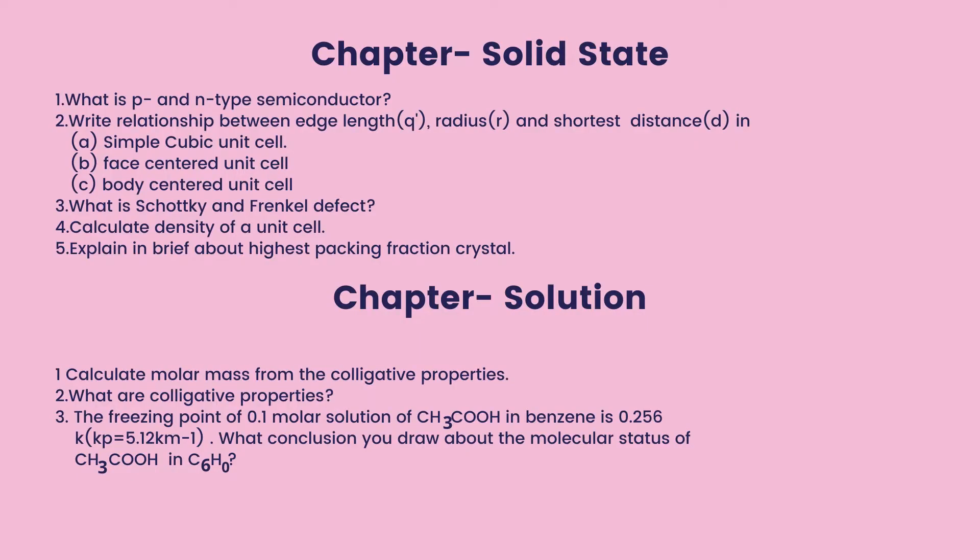Let's start. Chapter: Solid State. What is P-type and N-type semiconductor? Write the relationship between edge length, radius, and shortest distance in a simple cubic unit cell, a face-centered unit cell, and a body-centered unit cell. What is the Schottky and Frenkel defect? Calculate the density of a unit cell. Explain briefly about the highest packing fraction crystal.